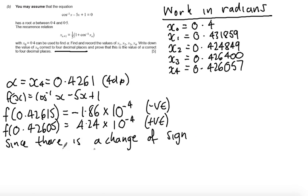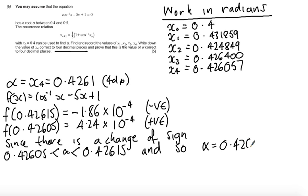What I would tend to say is that alpha lies between 0.42605. So I'm going to say 0.42605 is less than alpha, which is less than 0.42615. And so alpha equals 0.4261, correct, to four decimal places.